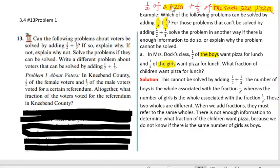So let's look at the example here. In Mrs. Dog's class, one half of the boys - the number of boys in the class is the hole for one half - want pizza for lunch, and one third of the girls want pizza for lunch.